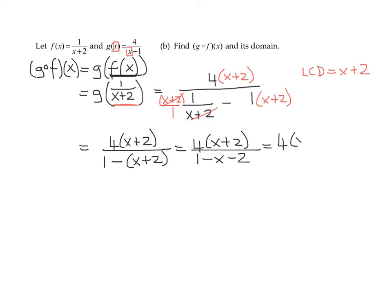So it's 4 times the quantity x plus 2 over, let's have a look what we have in the denominator. I have 1 minus 2. So that is going to give me negative x and a minus 1. If I combine my like terms of 1 minus 2 is negative 1.